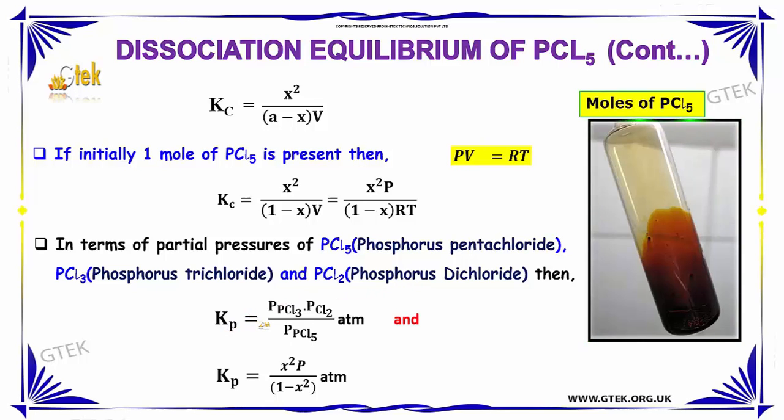Kc = P(PCl₃) × P(Cl₂) / P(PCl₅), atmospheric pressure. And Kp = X²P/(1-X²) atmosphere.